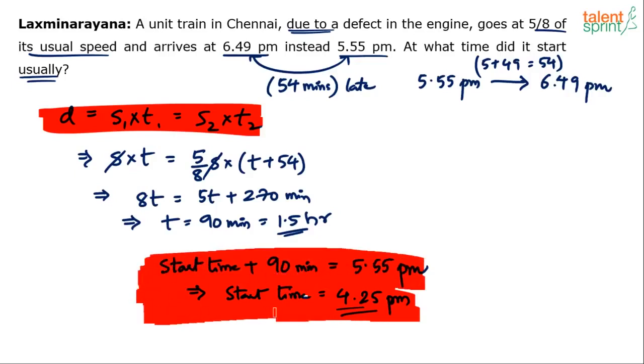What time should a train start if it has to reach at 5:55 PM after a 1.5 hours travel? It will be 4:25 PM. So not a very lengthy solution. 4:25 is the final answer without putting much effort.